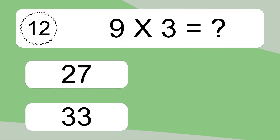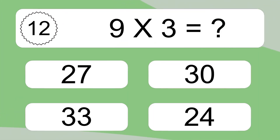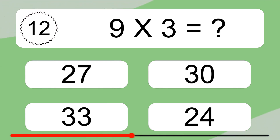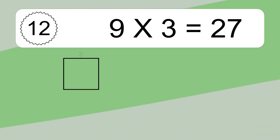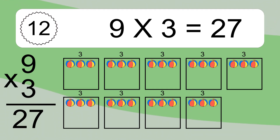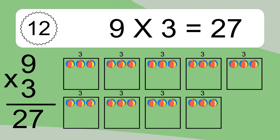9 times 3 equals what? 9 times 3 equals 27. We have 9 boxes, and each box has 3 colorful balls inside. If you count all the balls in all the boxes together, you will have 9 times 3 balls. This equals 27 balls.